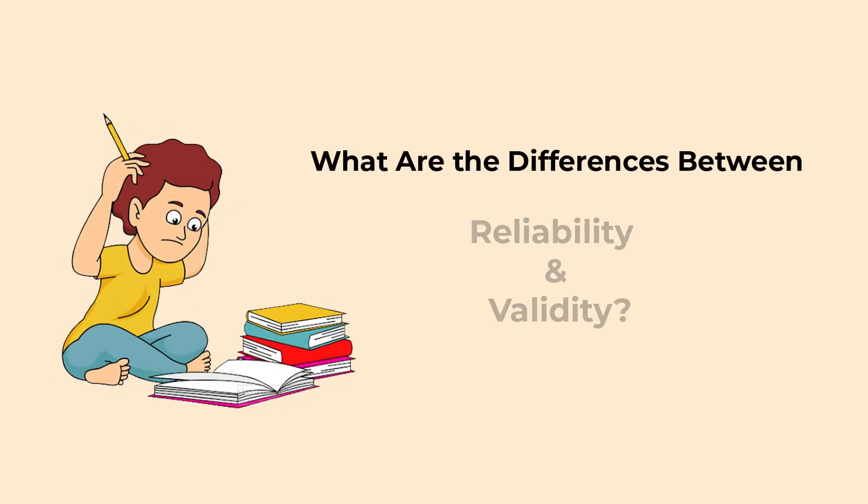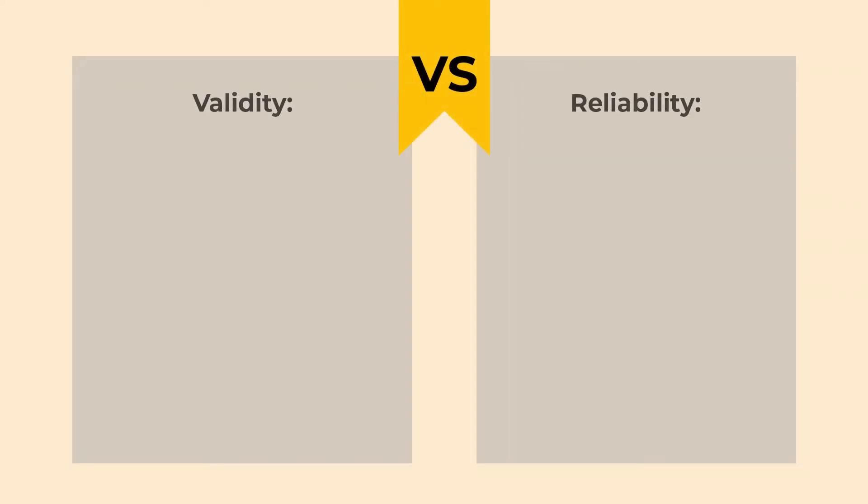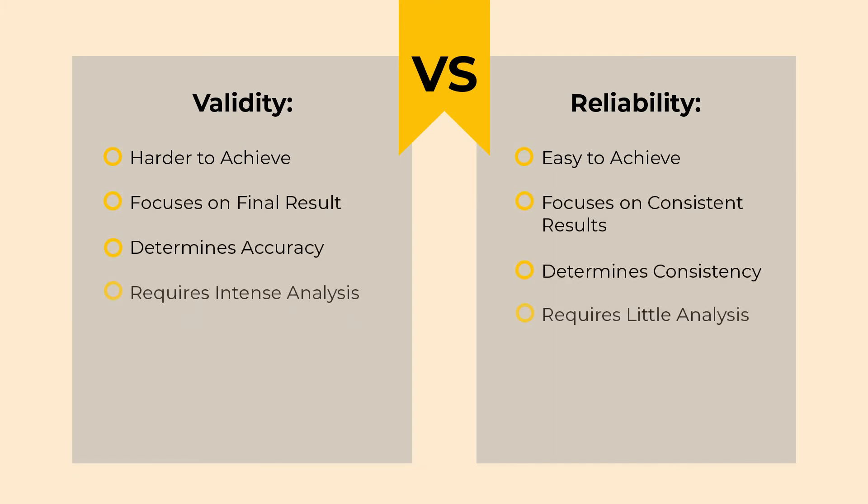Do you often get confused between reliability and validity in research? Not anymore. Determining validity is hard and denotes the accuracy of the method. Reliability is simple and denotes consistency. Both help to know how accurate research methodology is. Move ahead to know the examples.